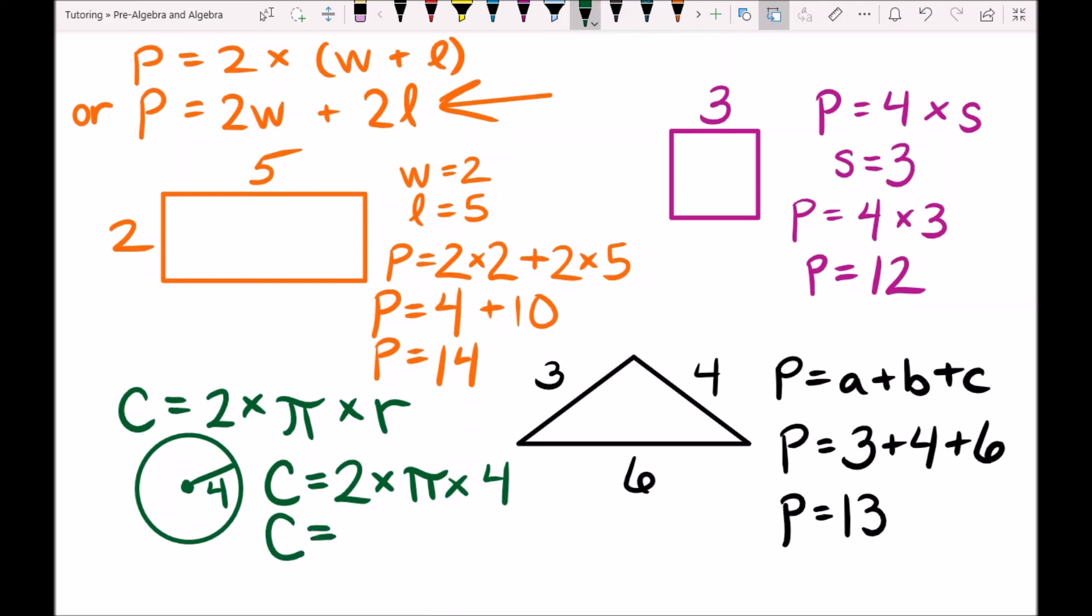So we can multiply the 2 and the 4 together before we involve pi. So we can write C is equal to 8 times pi. And sometimes it's alright to leave it like this because this is an exact answer.